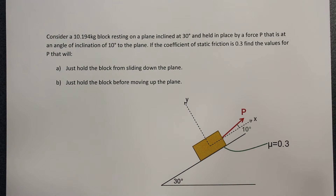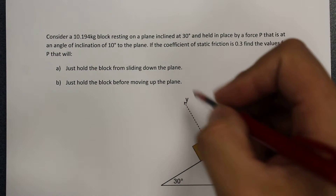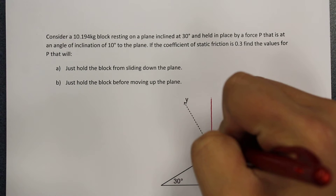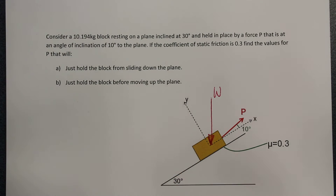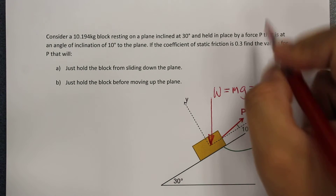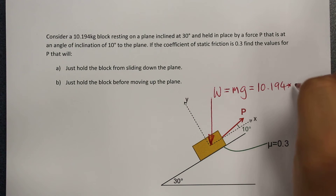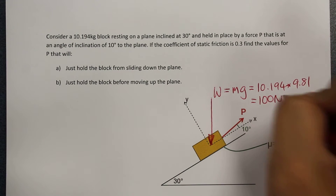The free body diagram will have a total of four forces acting on it. Firstly, there is the weight force. There is a 10.194 kg mass, so there will be a weight force acting in the vertical direction. We will call it W. If our mass is 10.194, it will be equal to the mass times gravity, so 10.194 times 9.81, which gives a reading of 100 Newtons.